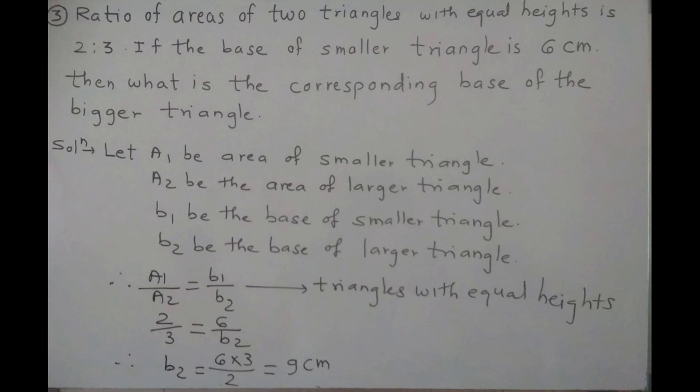Names of the triangles are not given. So we will assume A1 be the area of smaller triangle and A2 be the area of larger triangle. Since heights are equal, you are not supposed to consider height. We will only assume bases: B1 be the base of smaller triangle and B2 be the base of larger triangle. Since heights are equal, ratio of areas of two triangles is equal to ratio of their corresponding bases. Therefore, A1 upon A2 is equal to B1 upon B2. Write the reason: triangles with equal heights.